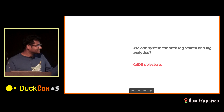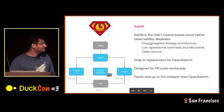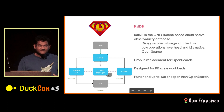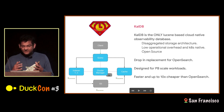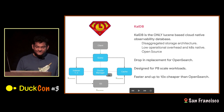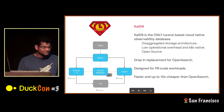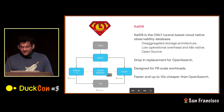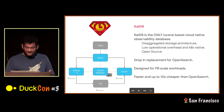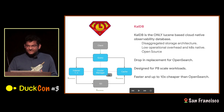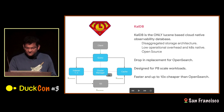But first, what exactly is CalDB? CalDB is basically currently the only Lucene-based cloud-native distributed observability database. It employs a disaggregated storage architecture, runs on Kubernetes, has very low operational overhead, and best of all, it's open source. It's a drop-in replacement for Elasticsearch, with the same query API and ingest API. It's designed for petabyte-scale workloads, and it's faster and up to 10x cheaper than OpenSearch.